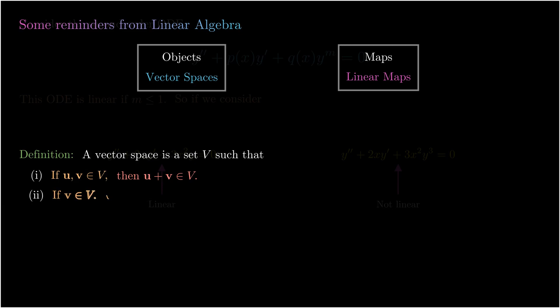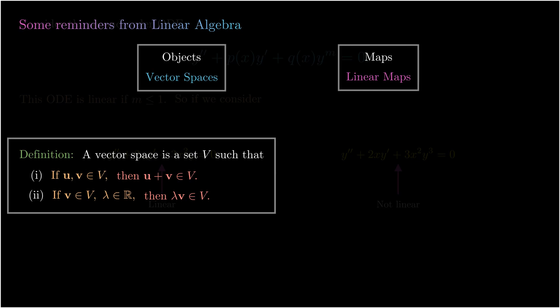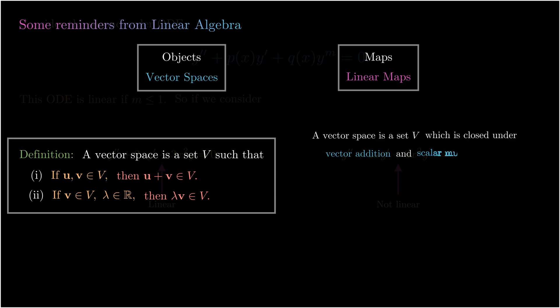The second condition is that if v is a vector in V and λ is some real scalar, then λ·v is in V. This is referred to as scalar multiplication. To sum up: a vector space is a set V which is closed under vector addition and closed under scalar multiplication. We won't discuss linear maps in this video.